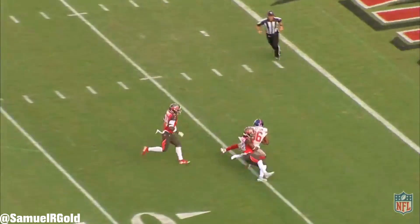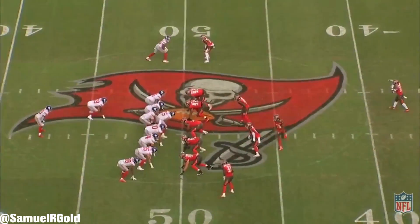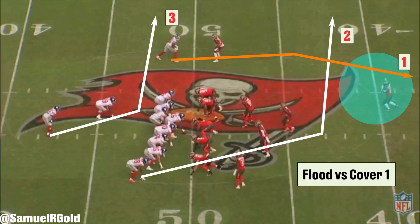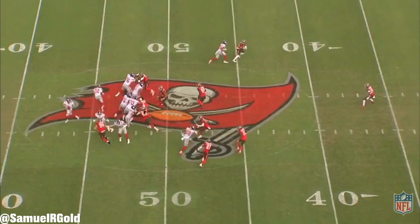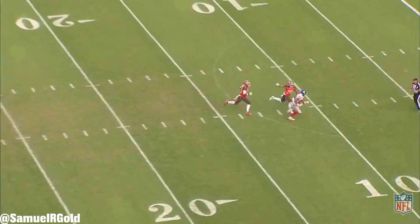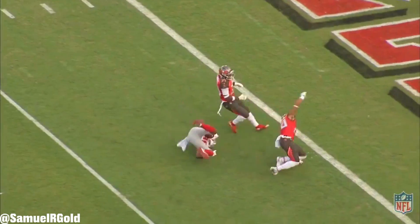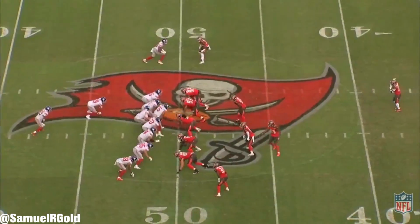The Giants ran a play action out of offset I-formation. Jones faked the handoff to his running back while the left receiver ran a deep post and his tight end on the right ran a crossing route. Meanwhile, the running back leaked into the flat as a check-down option. The progression order for Jones is high to low — start with the post route, move to the crosser, then finish with the check-down. Against a single high safety team, the crosser typically becomes the main target since the safety plays deeper. That didn't happen here; the safety lost track of the post route and Jones made him pay.